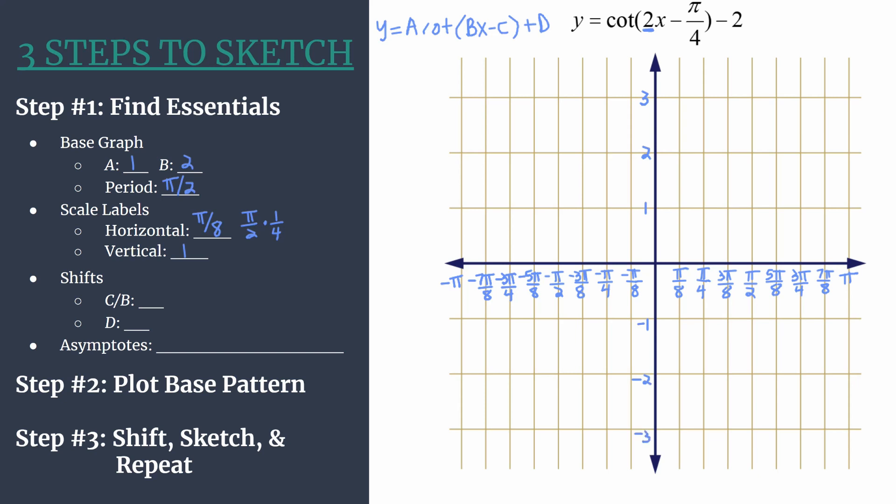We want to identify our shifts, and C over B is going to give us our phase shift. That's another name for a horizontal shift. We see that's coming from that bx minus c. Let's make sure we identify these correctly. We have 2x minus π over 4, so C itself must be π over 4. Then we're dividing by B, which we've already said is 2. So dividing by 2 is the same thing as multiplying by 1 half. That means we're going to be shifting to the right π over 8, or that's one horizontal grid unit. Our scale does work really nicely for this as well.